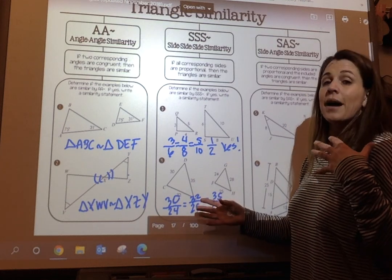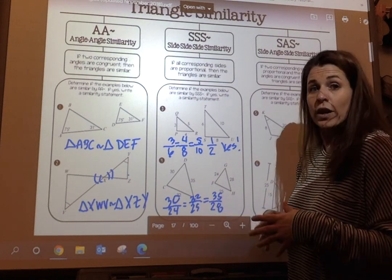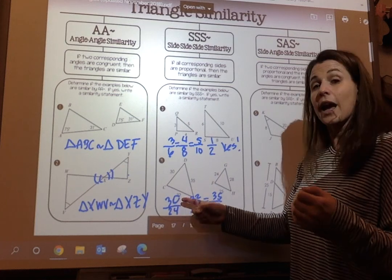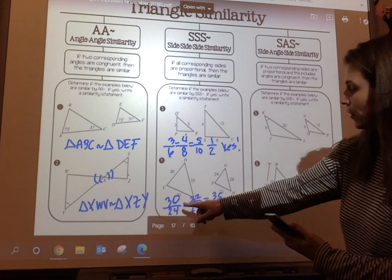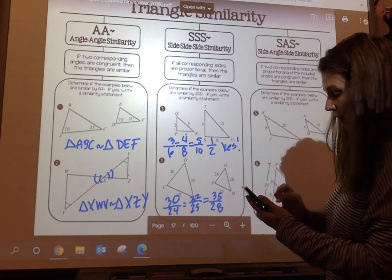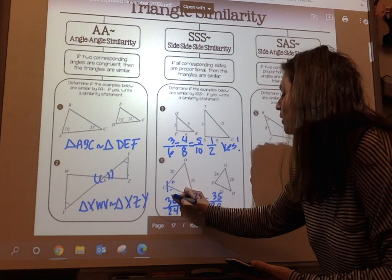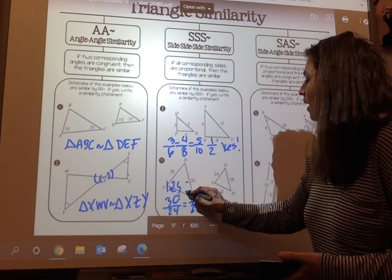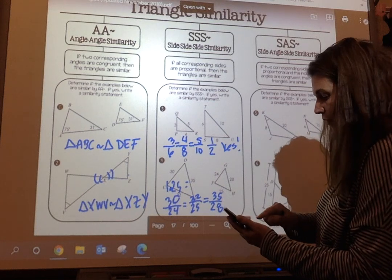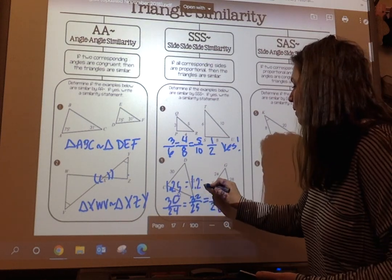So watch what I'm going to divide here. I am simply going to type in 30 divided by 24, and I get 1.25. That's the aspect ratio. It just means you're finding the decimal form. And I'm going to divide 32 divided by 25, and I get 1.28.